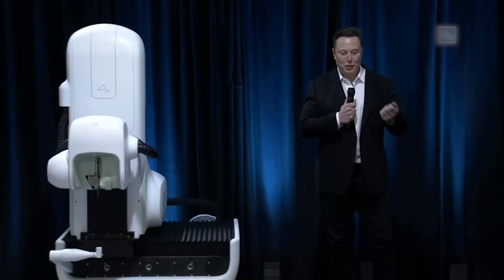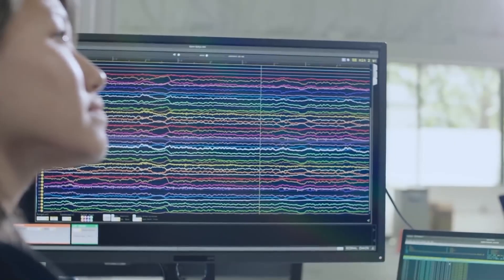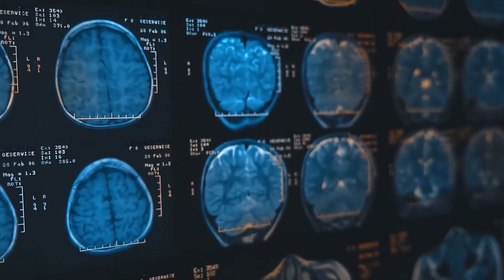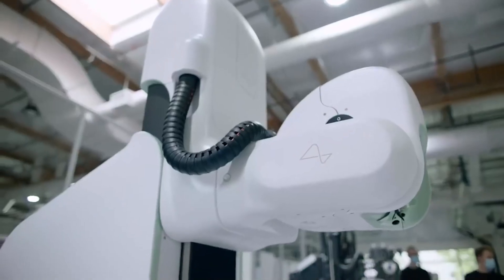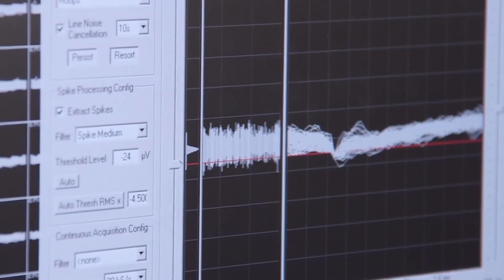Musk and his team confront technical challenges and ethical considerations associated with brain-machine interfaces, addressing implantation procedures, long-term effects, data privacy, and responsible use. Their goal is to ensure groundbreaking advancements are safe, effective, and aligned with ethical principles.